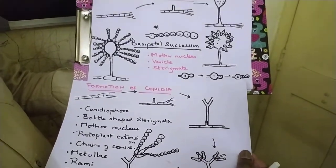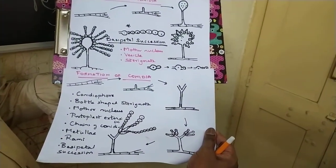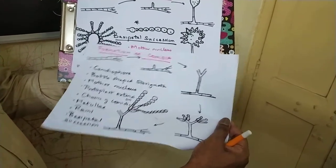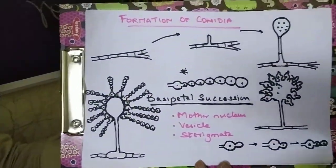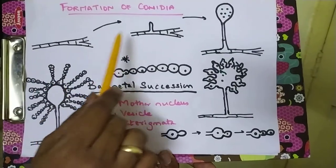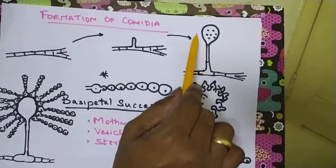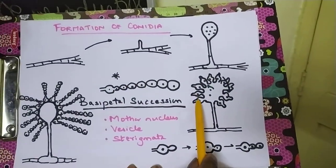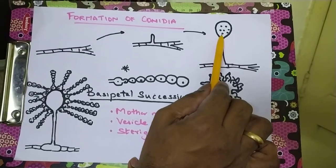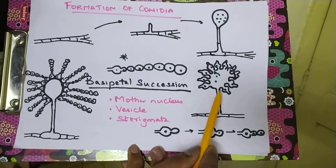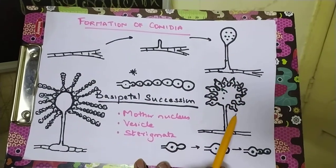Now comparing Penicillium and Aspergillus — in Penicillium the sterigmata are bottle-shaped with a metuli structure, but in Aspergillus you find a vesicle. There is no vesicle in Penicillium's conidia formation. In Aspergillus, the sterigmata develop on the wall of this vesicle with no branching below. Cytoplasmic contents move through a cell called the foot cell, which gives rise to the conidiophore, and the vesicle later bears many bottle-shaped sterigmata.